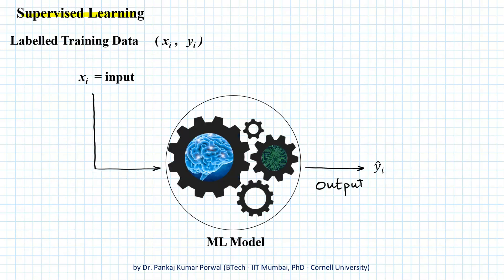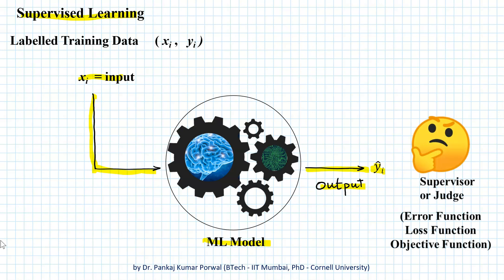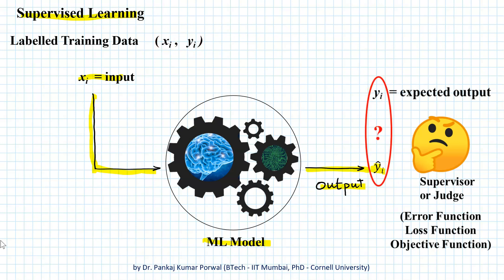In supervised learning, when we start with a raw machine learning model and give an input xi to our model, it gives us an output — let's call that yi-hat. In the supervised learning paradigm, we have a supervisor or a judge who knows the actual or expected output corresponding to input xi, that is yi, and he compares the output of our model with the expected output and gives feedback to our model.